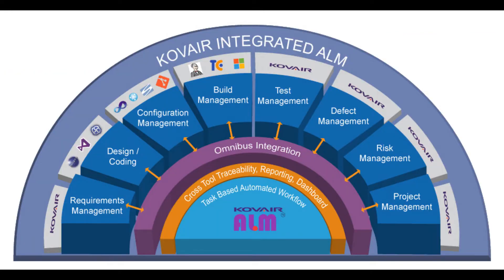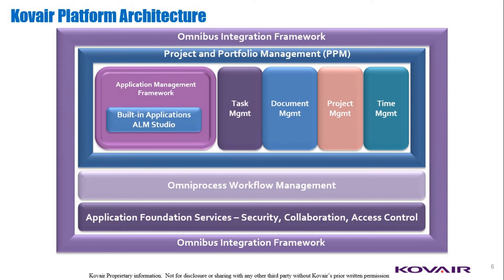Kovair ALM is an integrated, collaborative, and mouse-click configurable platform that offers holistic capabilities to all phases of application lifecycle management including project management, requirements management, development, and testing and quality assurance. Powered by capabilities like end-to-end traceability and real-time reporting using data from all phases of the lifecycle, Kovair ALM provides a single source of truth for all users involved in each of the lifecycle phases.